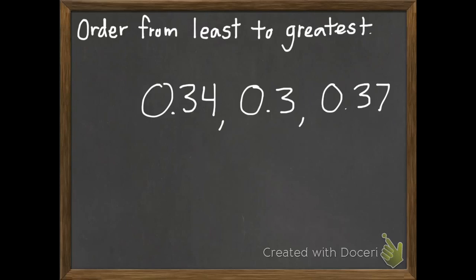Pause it, and then when you have it done, check to see if you got it right. Okay, here we go. Three tenths is the least, 34 hundredths is in the middle, and 37 hundredths is the greatest.